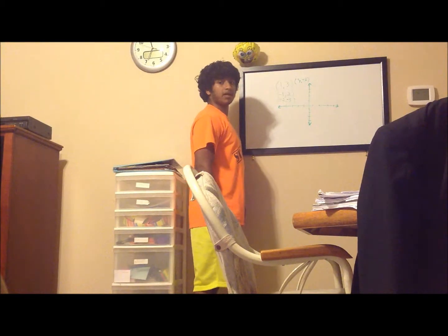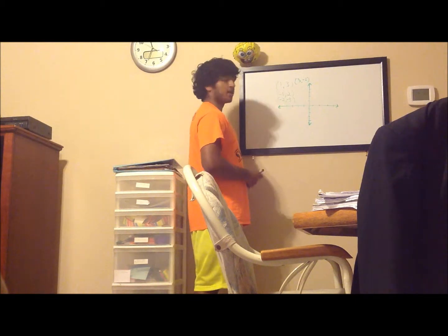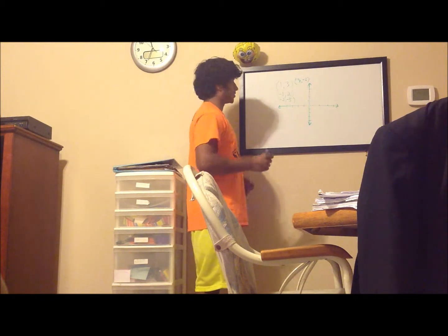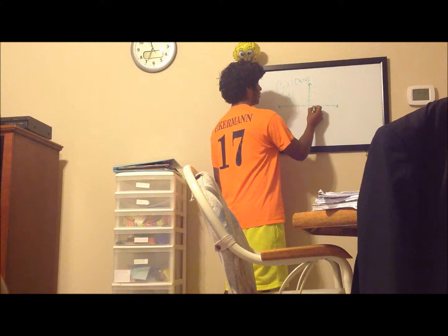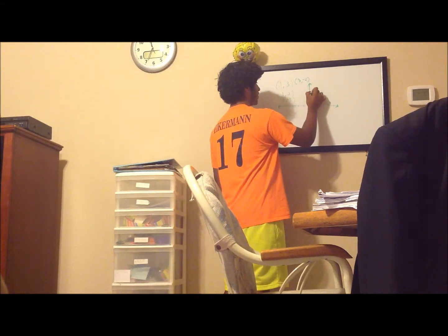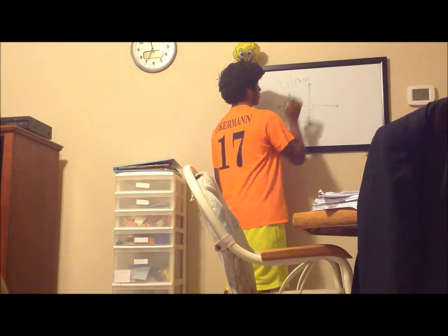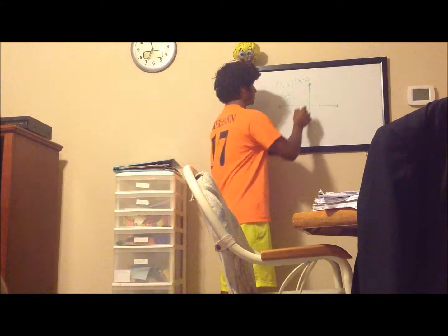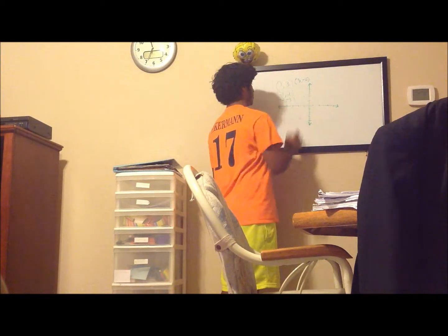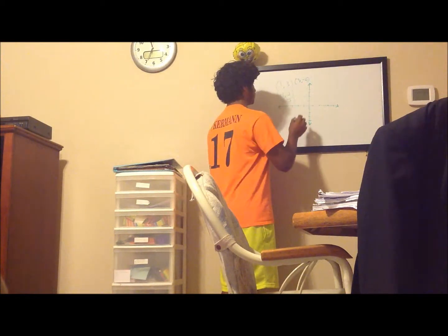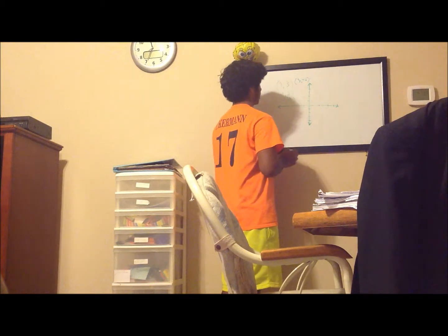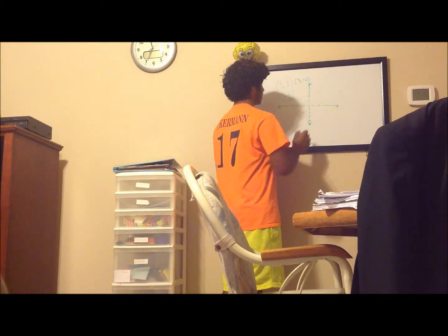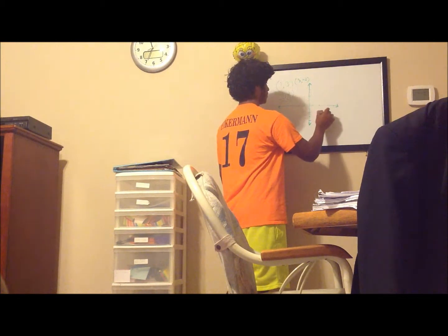The coordinate plane can be used as a dot system to plot exact points. For example, (1, 3): you go 1 on the X axis and then 3 on the Y axis. Negative 1, 2 is negative 1 and up 2. Negative 2, negative 3 is negative 2 and then down 3. And (3, negative 2) is 1, 2, 3 on X and 1, 2 on Y.